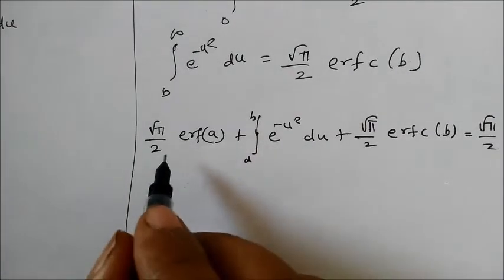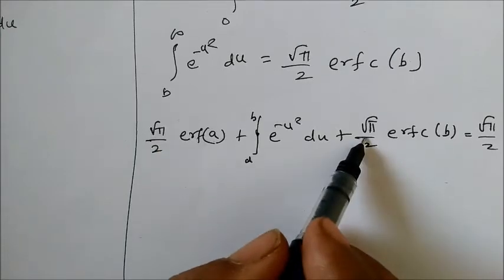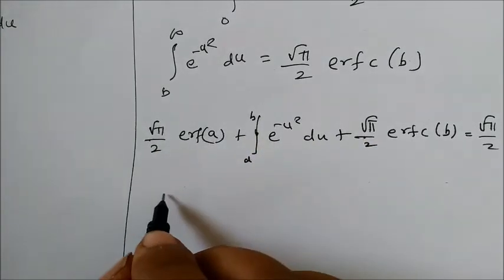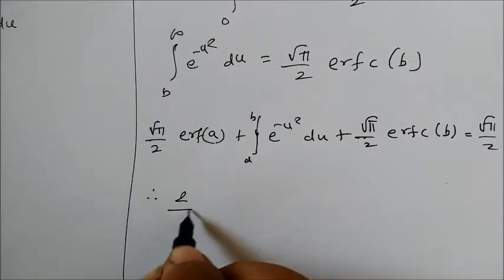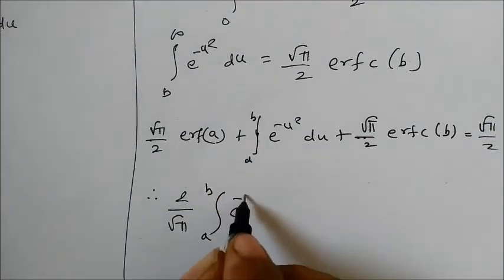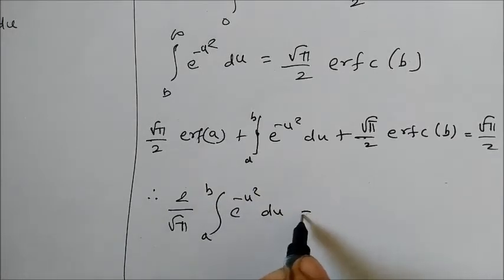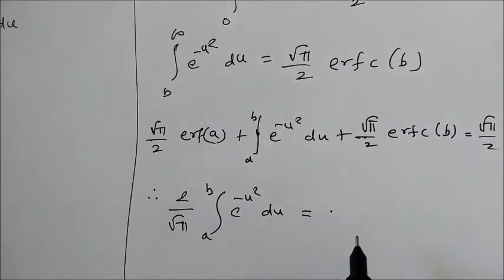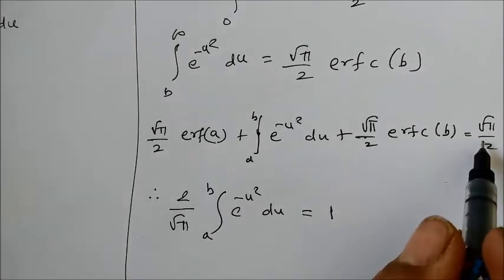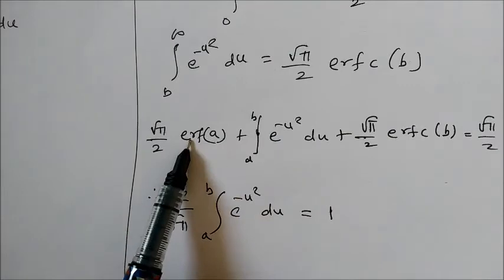This will get canceled, and here we will have 2 by root pi. So we have therefore 2 by root pi integral a to b, e to the power minus u square du is equal to 1 on this side, and then this erf of a and erfc of b I will subtract over there.